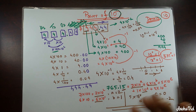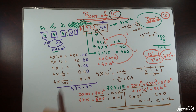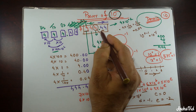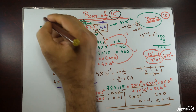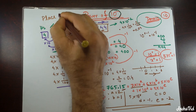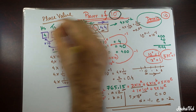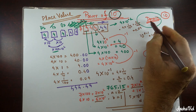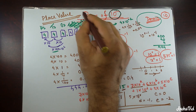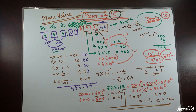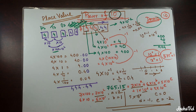This is the place value system of our daily counting, and this is the power of 10. You can see that wherever we put the digit, its position gives it more value or less value. We call this place value. Thank you for listening. See you in the next video. Take care, bye-bye.